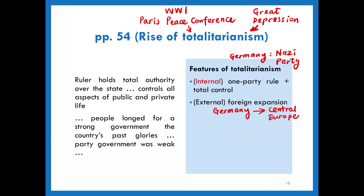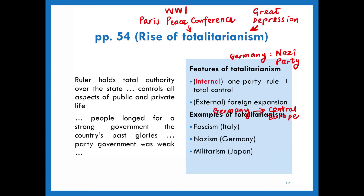Some notes for you to write down would be examples of totalitarian countries between the two world wars. The first one is fascism in Italy. The second one is Nazism in Germany. Third is militarism in Japan. And finally, communism in the Soviet Union. In the coming two lessons, we are going to focus on fascism, Nazism, and militarism.